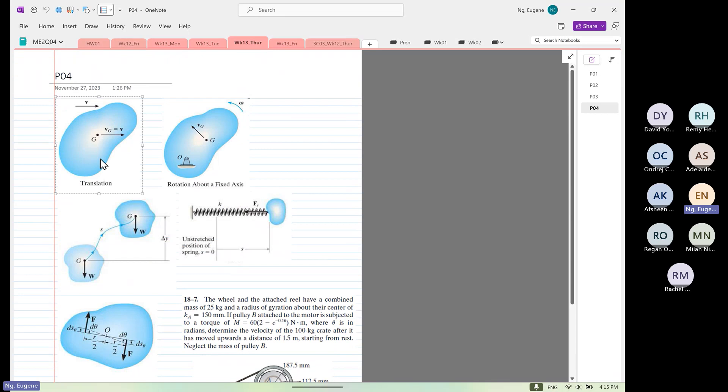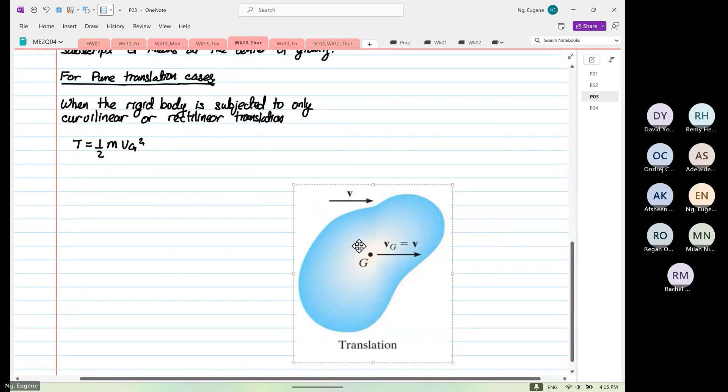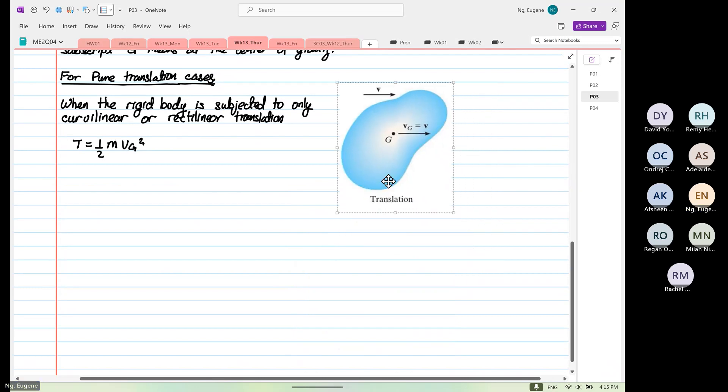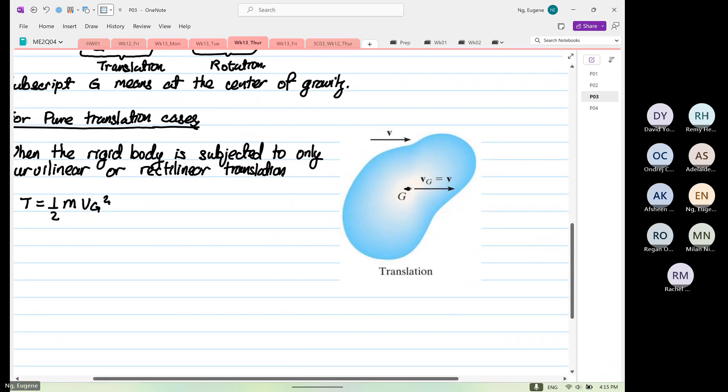So this is what we mean. So at about point G, as I say, the velocity is acting at the center of gravity. And over here, omega is equal to zero. So this is very obvious.